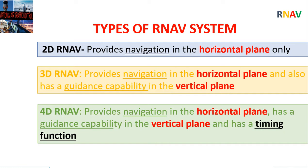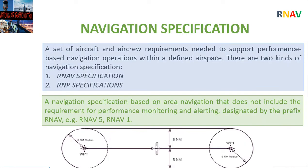Types of area navigation systems: A two-dimensional RNAV system provides navigation in the horizontal plane. A three-dimensional RNAV system provides navigation in the horizontal plane and also has guidance capability in the vertical plane. A four-dimensional RNAV system provides navigation in both planes and additionally has a timing function.